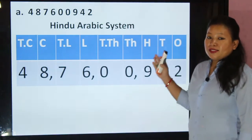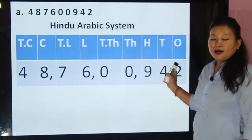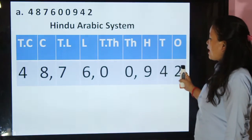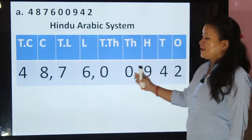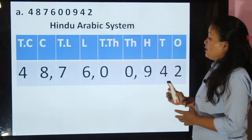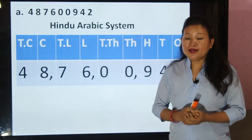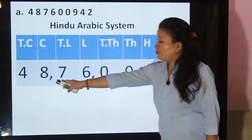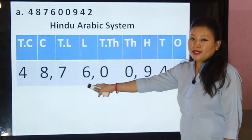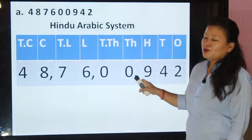Now let us place the number starting from the right — that is, place each digit starting from the ones place. I have placed it correctly here. As you know, after each period we put a comma: after the crore period we put a comma, after the lakh period we put a comma, and after the thousand period we put a comma.